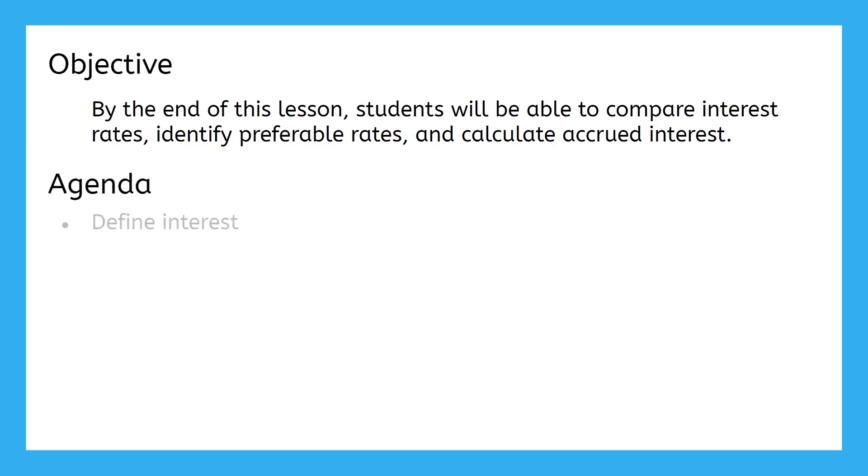To achieve that objective, we're going to first discuss the basis of what interest is. Then we'll look at how the two main types of interest, simple interest and compound interest, work and how they're calculated. We'll also learn about the rule of 72, a valuable tool for estimating how quickly compound interest grows.